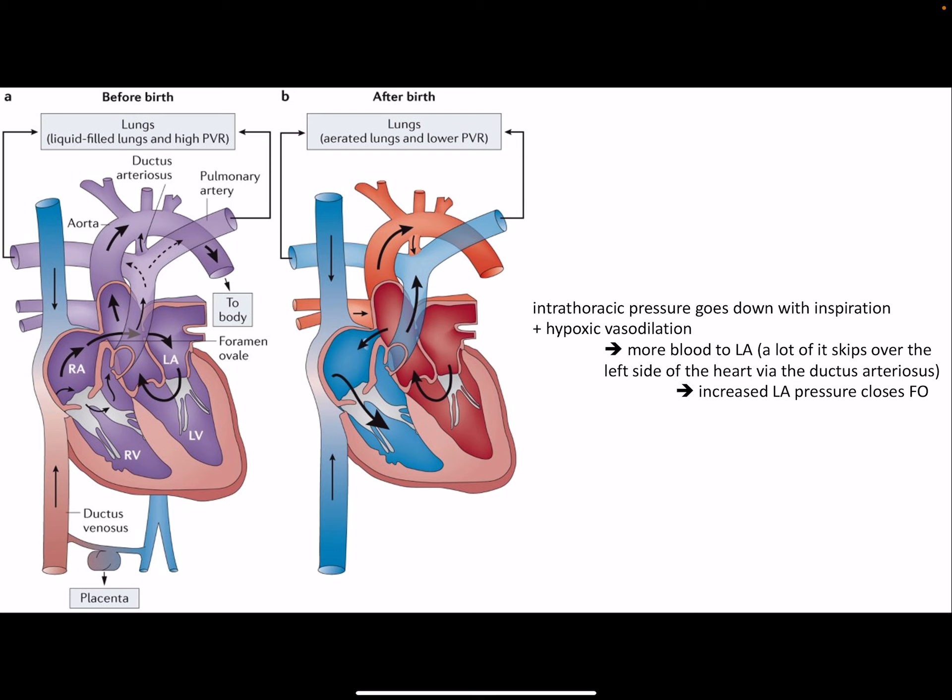Once a baby is born and takes its first breath, there's a decrease in intrathoracic pressure, and oxygen comes in, causing hypoxic vasodilation, which further decreases pulmonary pressure. More blood is pulled into the lungs, meaning more blood into the left atrium. Eventually, left atrial pressure becomes higher than right atrial pressure, which closes the flap of the foramen ovale, and the septa fuse — hopefully closing it permanently.